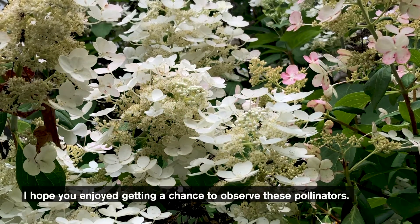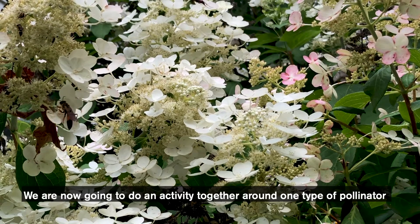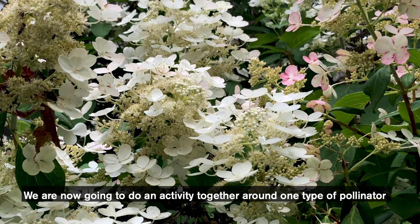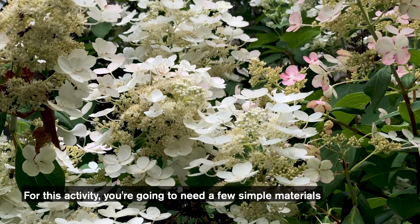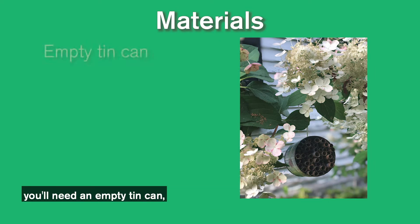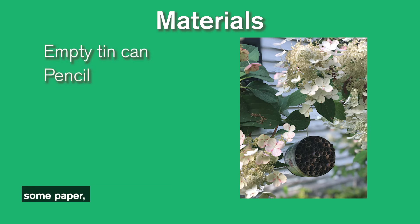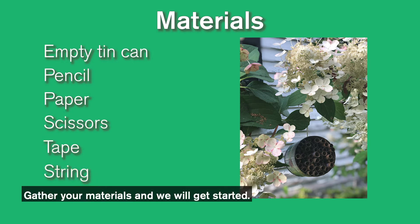I hope you enjoyed getting a chance to observe these pollinators up closely. We're now going to do an activity together around one type of pollinator: bees. For this activity, you're just going to need a few simple materials. You'll need an empty tin can, a pencil, some paper, scissors, tape, and string. Gather your materials and then we'll get started.